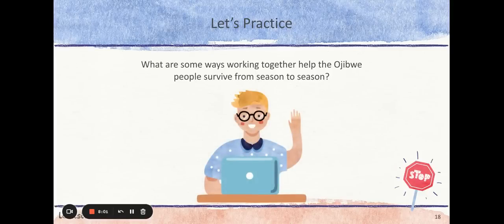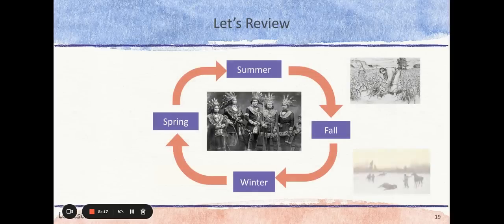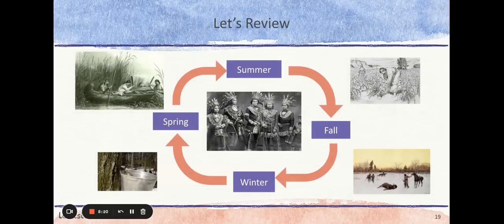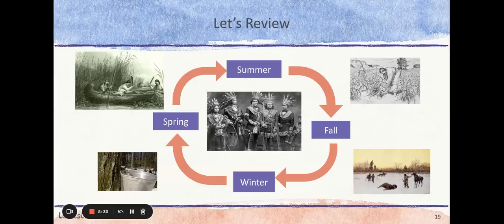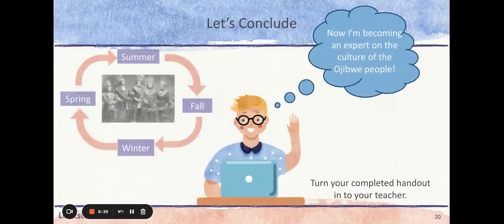Now you are ready to think about how working together helped the Ojibwe people survive from season to season. Use what you have learned to respond on your handout. Pause this video to record your answers on your handout at the fifth stop sign, then hit play when you are ready to continue. There are several ways the Ojibwe worked together to survive off of the land. You may have included that they moved from season to season to use the land in different ways, or that each tribe member had a different role such as hunting, planting, drying and preserving food, making baskets, canoes and snowshoes, sewing cloth, or building homes.